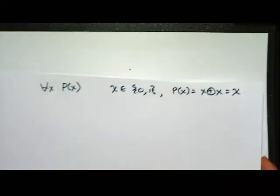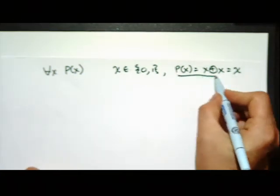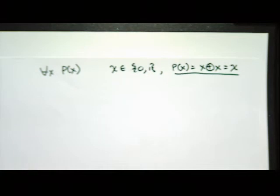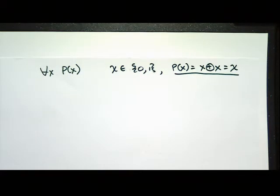Let's do another example. P of X is X XOR X equals X, where X is a proposition with value 0 or 1. We already looked at that statement — we want to figure out 'for all X, P of X.' We figured out it was false. In general, when looking at a proposition and a quantifier for the proposition, we make a truth table for all X — we should have all ones for 'for all X is true.'